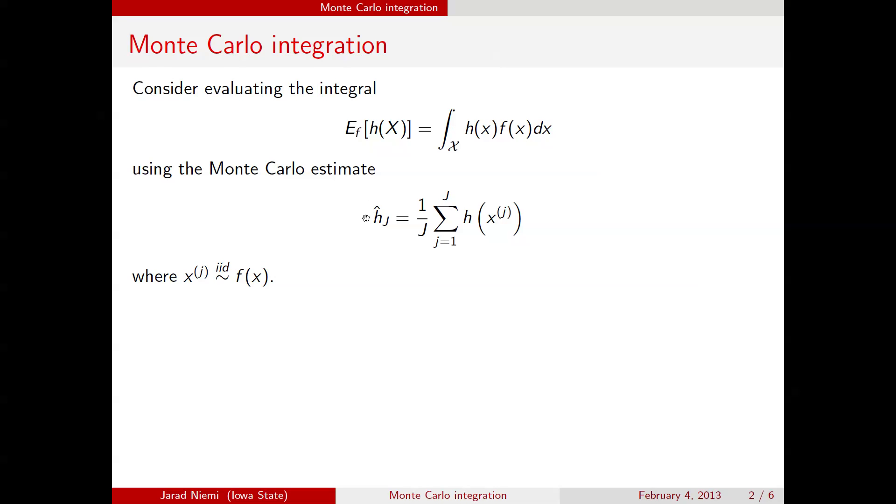That is exactly what this estimate h sub j is, where the subscript here is indicating how many simulations we've taken. So capital J here is how many simulations we're taking. So basically, simulate from f, calculate h, take the average.